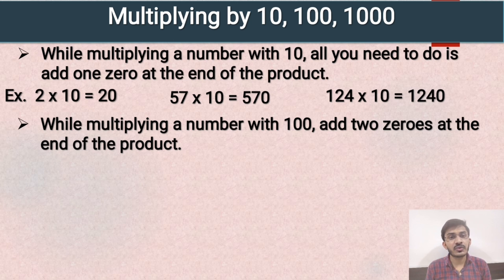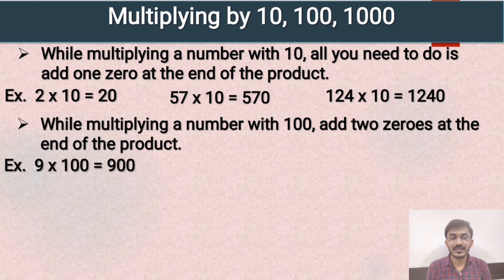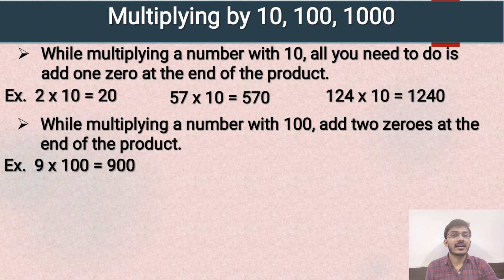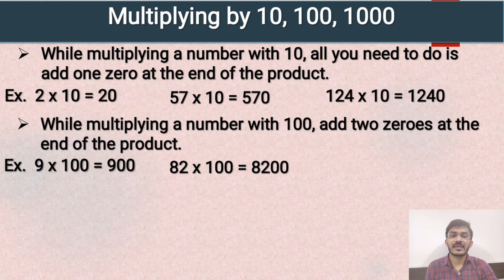Second rule: while multiplying a number with 100, add two zeros at the end of the product. For example, 9 multiplied by 100 — take the product of 9 and 1, which is 9, and add two zeros. So the answer will be 900. Second example: 82 multiplied by 100 — 82 ones are 82, and we add two zeros at the end. So the answer will be 8200.